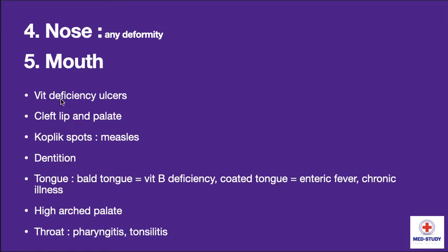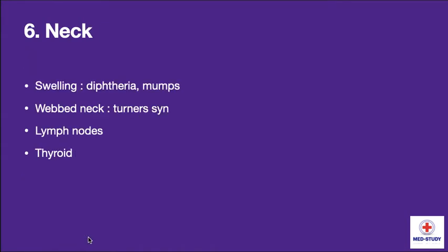For mouth, we have to look for vitamin deficiency ulcers, cleft lip and palate, and Koplik's spots which are specific to measles. We have to look for dentition and examine the tongue — whether it is a bald tongue as seen in vitamin B deficiency, or a coated tongue as seen in enteric fever and chronic illness. We have to look for a high arched palate and examine the throat for pharyngitis and tonsillitis.